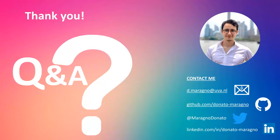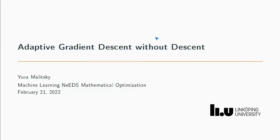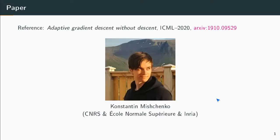Thank you Donato for your nice presentation. We will now go to our last speaker, Juri Malitski, an assistant professor in applied mathematics from Linköping University in Sweden. He will talk about 'Adaptive Gradient Descent Without Descent.' I will talk about a recent paper — adaptive gradient descent without descent — a recent paper with Constantine; you can find the details if you are interested.